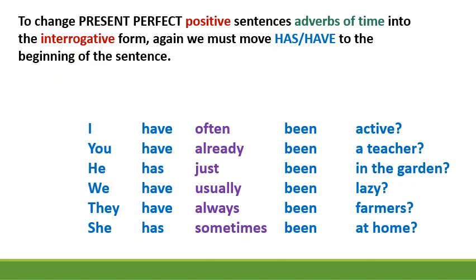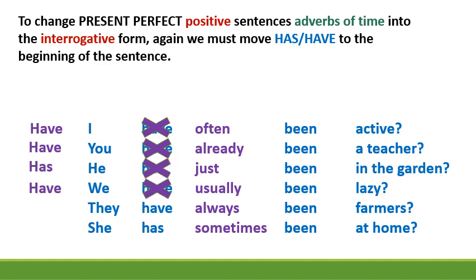To change present perfect positive sentences with adverbs of time into the interrogative form, again we must move has or have to the beginning of the sentence. Have I often been active? Have you already been a teacher? Has he just been in the garden? Have we usually been lazy? Have they always been farmers? Has she sometimes been at home?